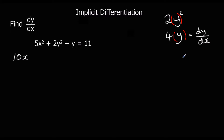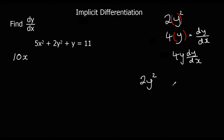So we get 4y dy/dx. We can think of this as differentiating normally with respect to y — times by the power, take 1 off the power to get 4y — and then we just put dy/dx after it. So: differentiate it normally, then put dy/dx after it.